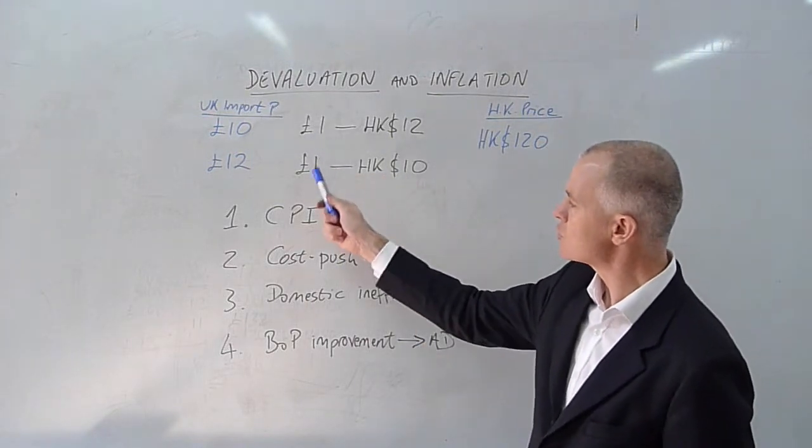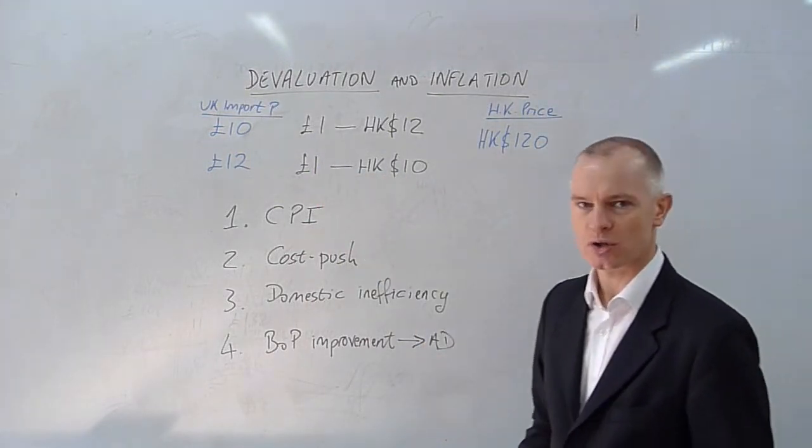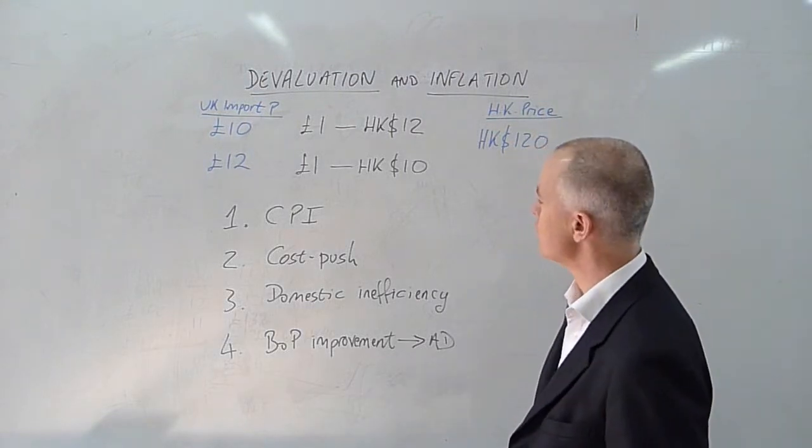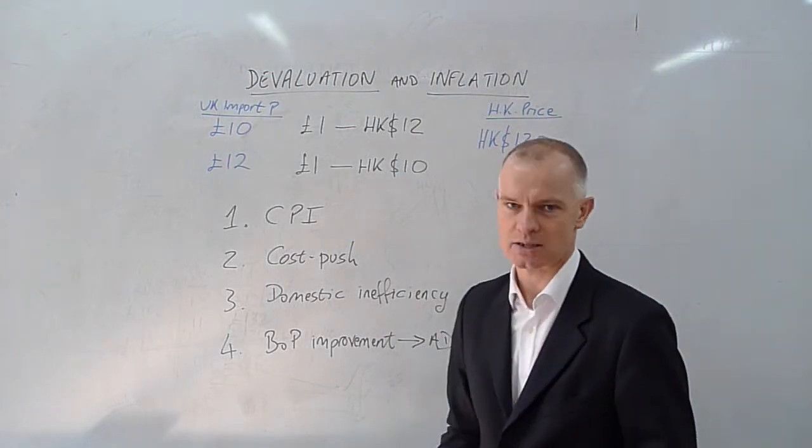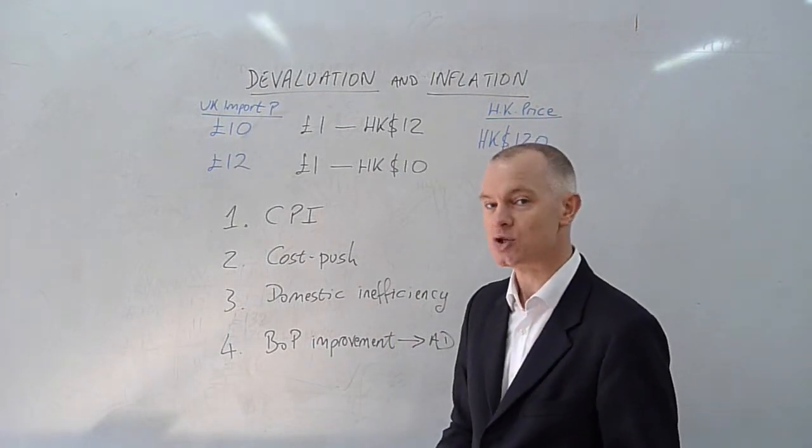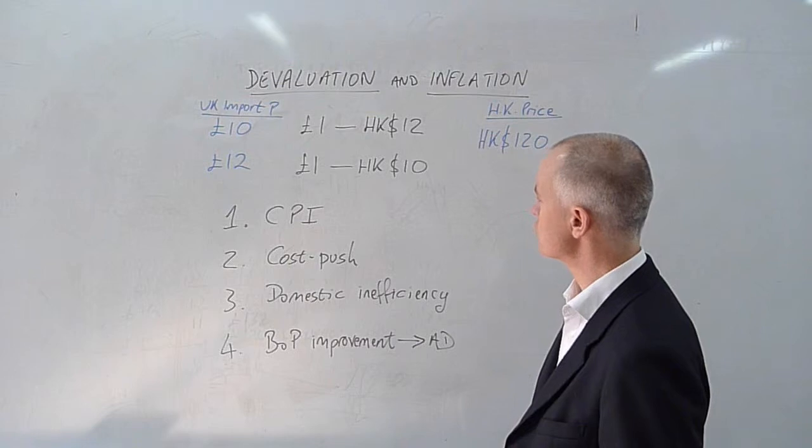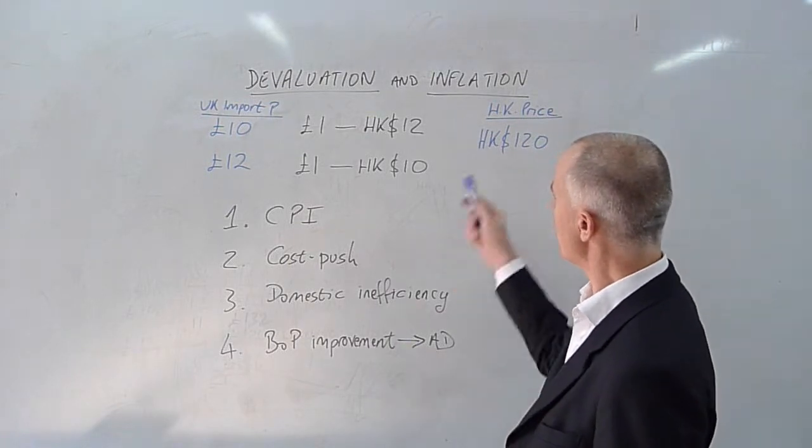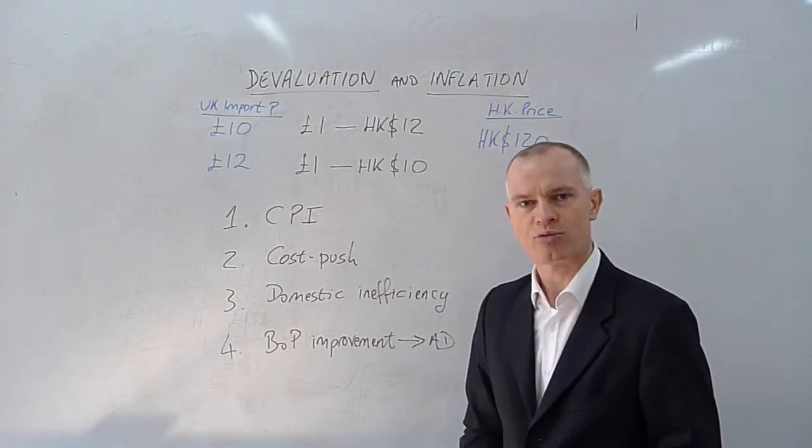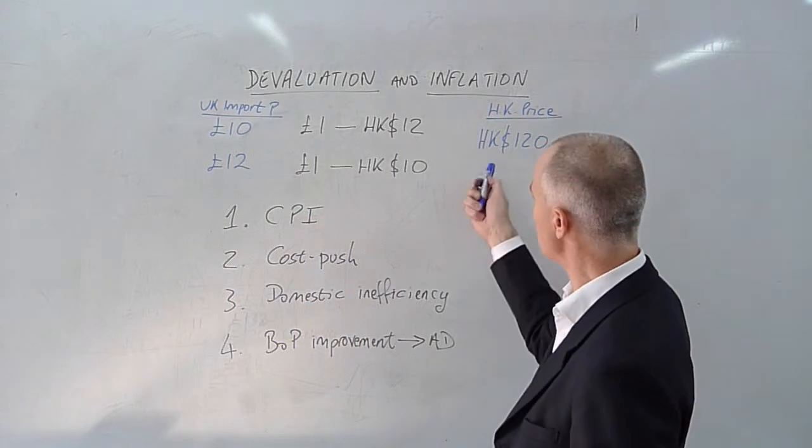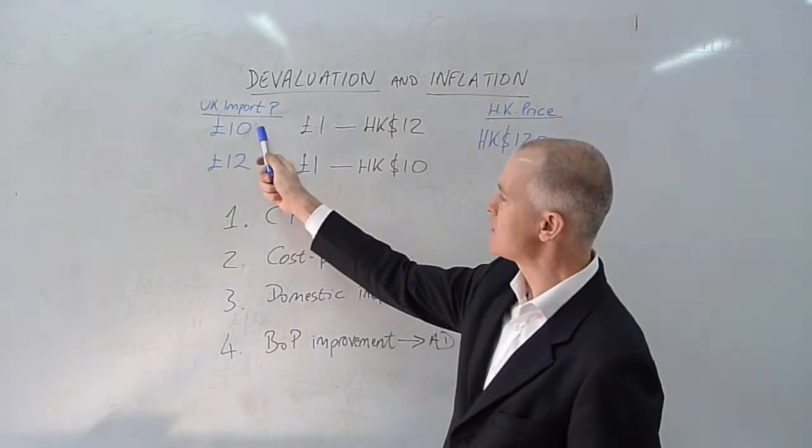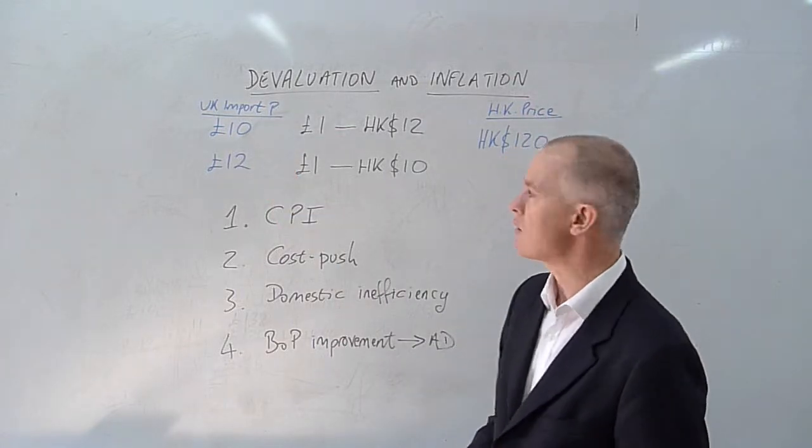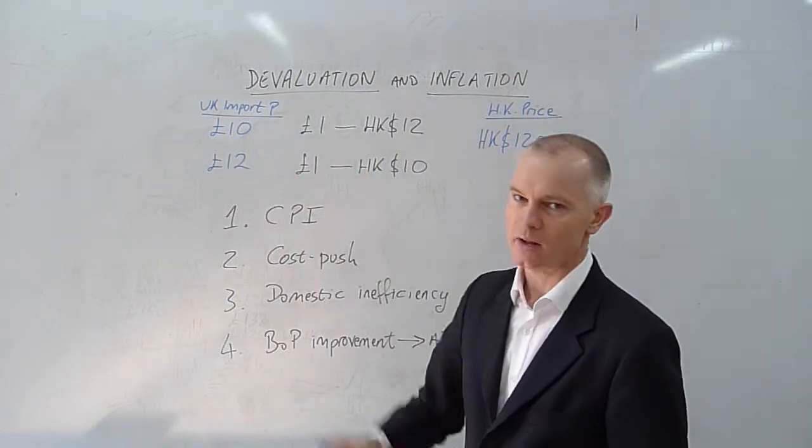In this case, we are considering pounds sterling. We'll give you this from the point of view of the United Kingdom. A devaluation of sterling means that the external price, the price of pounds in terms of Hong Kong dollars, falls. If we wish to buy a product imported from Hong Kong, whose price remains constant at $120 Hong Kong dollars, we will see its price rise in the UK from £10 to £12.